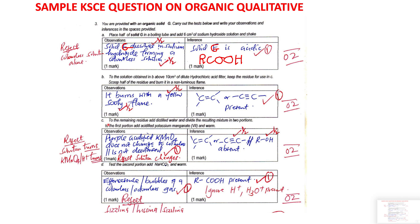To the remaining residue — after adding hydrochloric acid and filtering — add distilled water, divide the resulting solution into two portions. To the first portion, add acidified potassium manganate(VII). The purple acidified potassium manganate(VII) is not decolorized. Note: we reject solution terms — you must mention the color change.